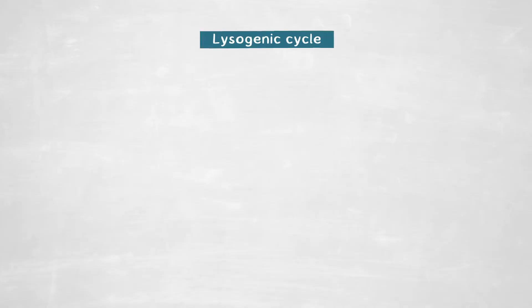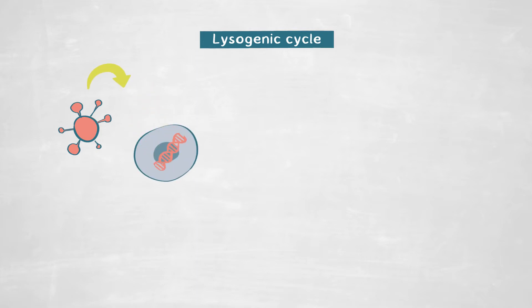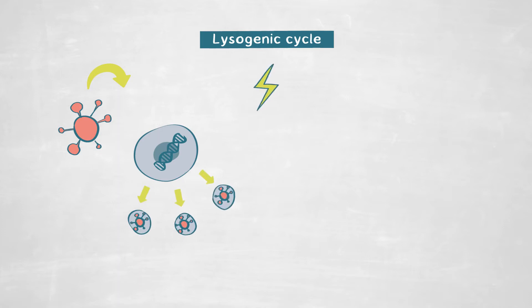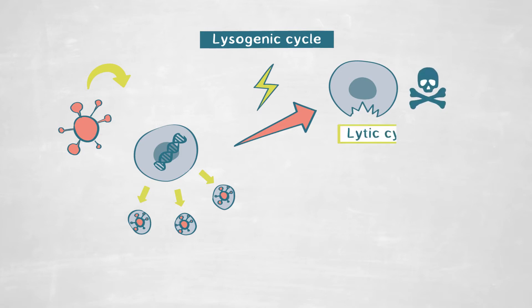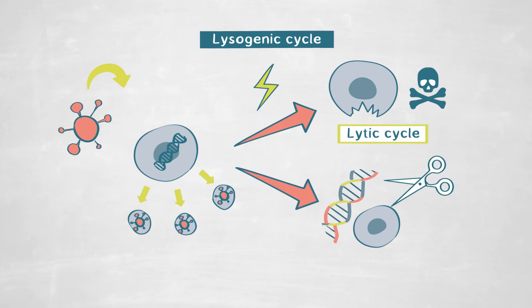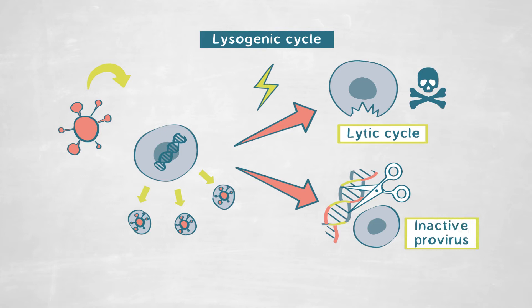For example, viruses can produce lysogenic life cycles, where they inject their genome and it is integrated into the host chromosome, and viruses reproduce along with the cells, until there is some environmental trigger that causes the virus to go from this lysogenic into the lytic cycle. Alternatively, the host can find a way to remove the infectivity modules out of the viral genome, and the genetic information of the virus remains integrated into the host chromosome as an inactive provirus.